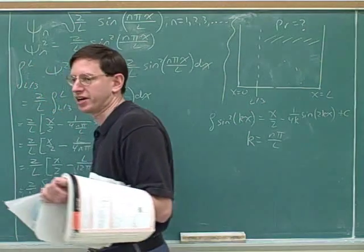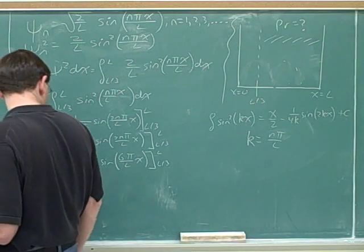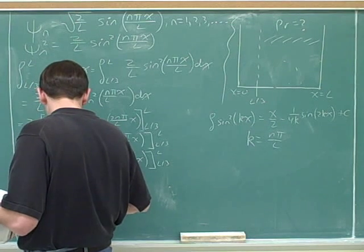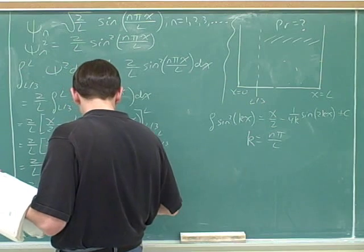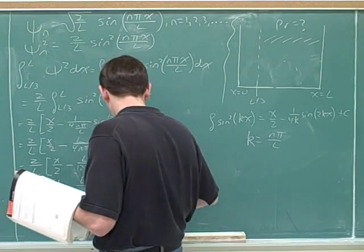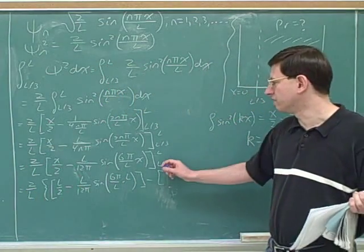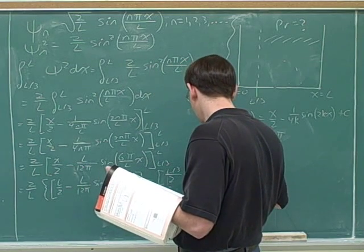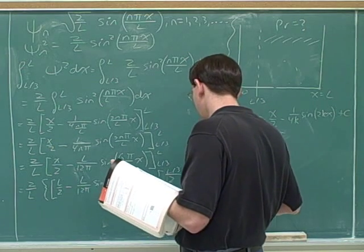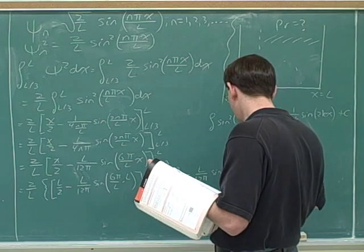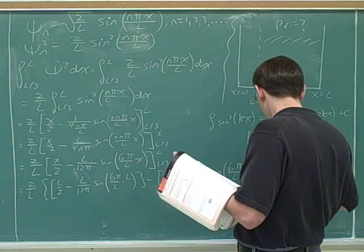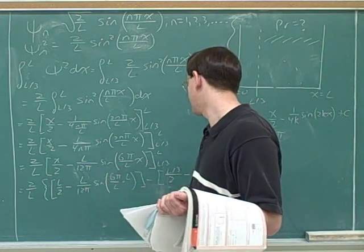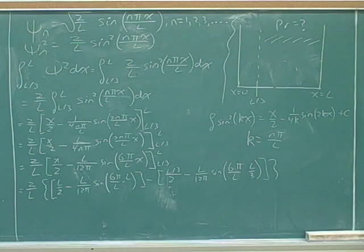I'm going to put in a great big bracket over here. And then what do we plug in for X? L. And then we're going to have to plug in L over 3 for X. You can see why we had to introduce a new level of parentheses with these brackets to hold everything in place. First we plugged L into this difference, and then we plug L over 3, and then we're subtracting those two differences.